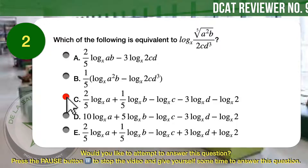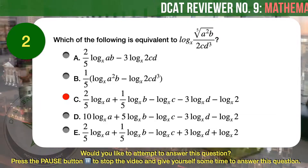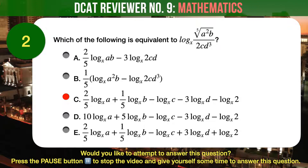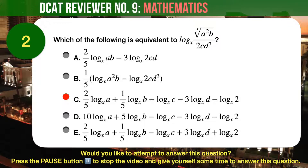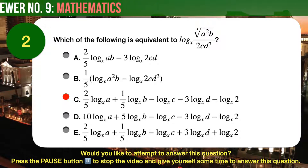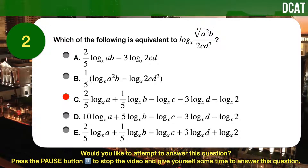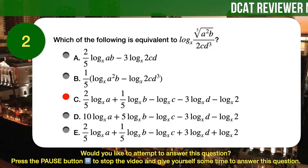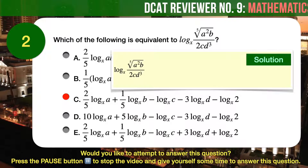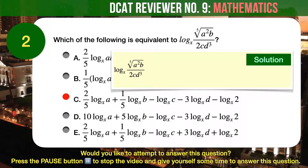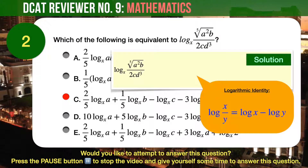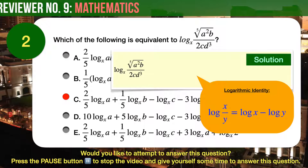The correct answer is C. Problems involving logarithms can be quite intimidating, but it's all a matter of knowing your logarithmic identities. If you have familiarized yourself with — or better yet, even memorized — your logarithmic identities, the solution will come to you naturally. For this particular logarithmic problem, the first step is to rewrite the given expression using the various logarithmic identities. We know that the logarithm of x over y is equivalent to logarithm of x minus logarithm of y.